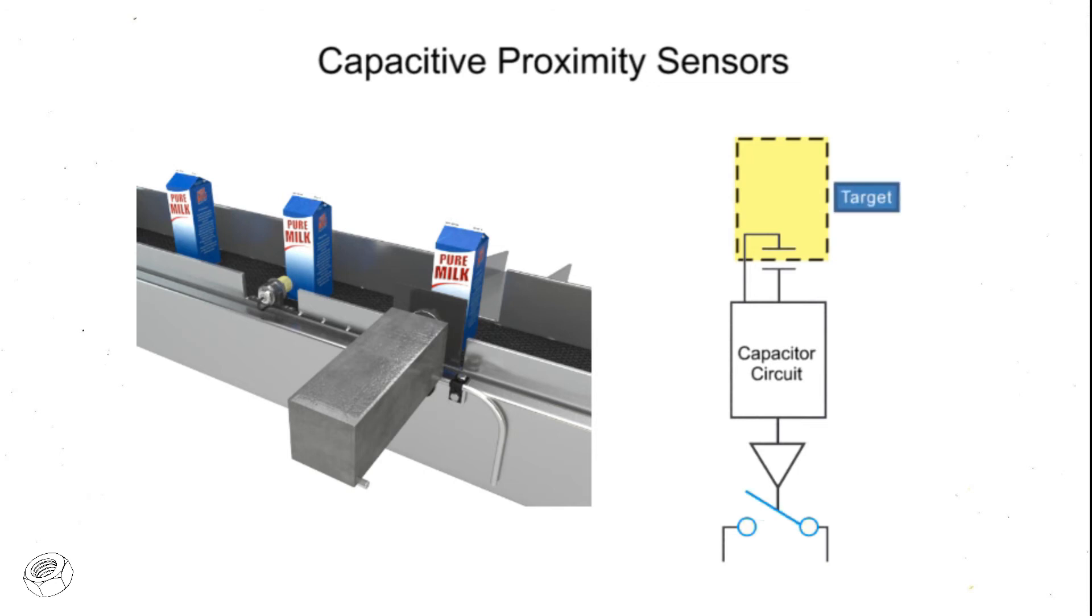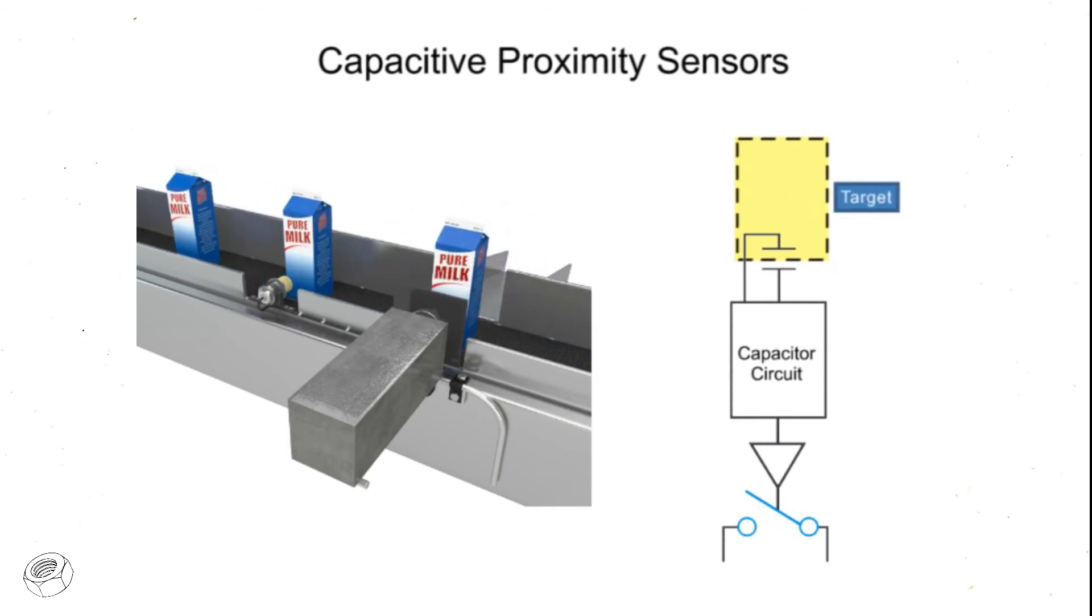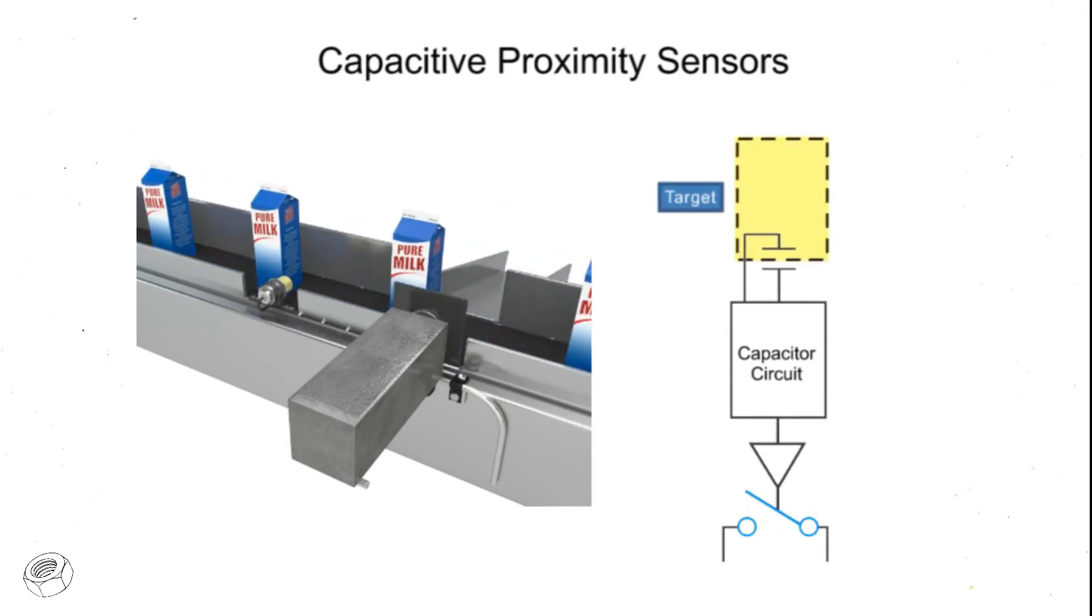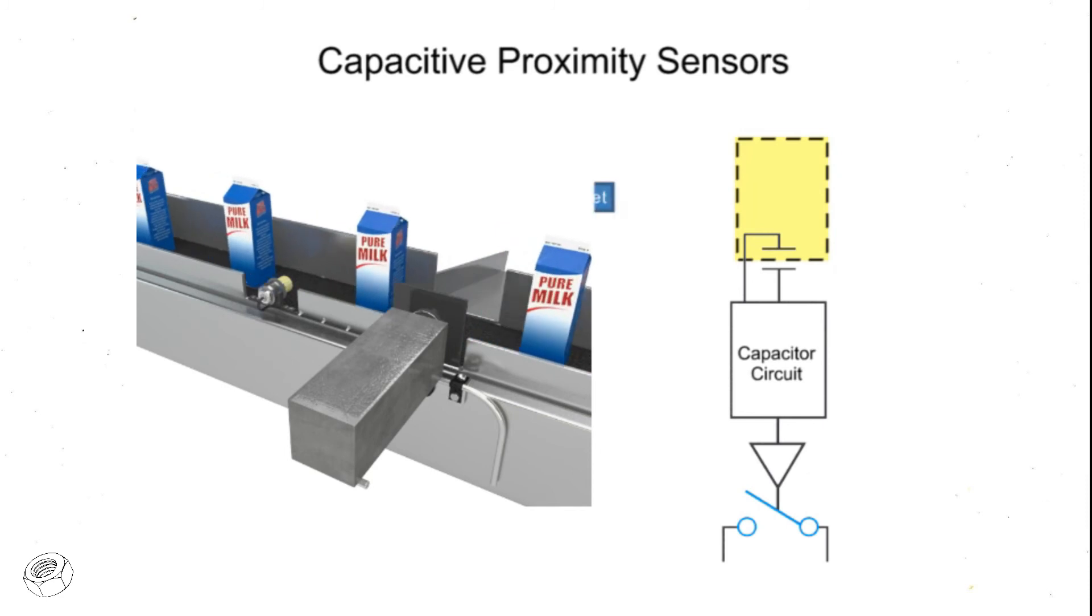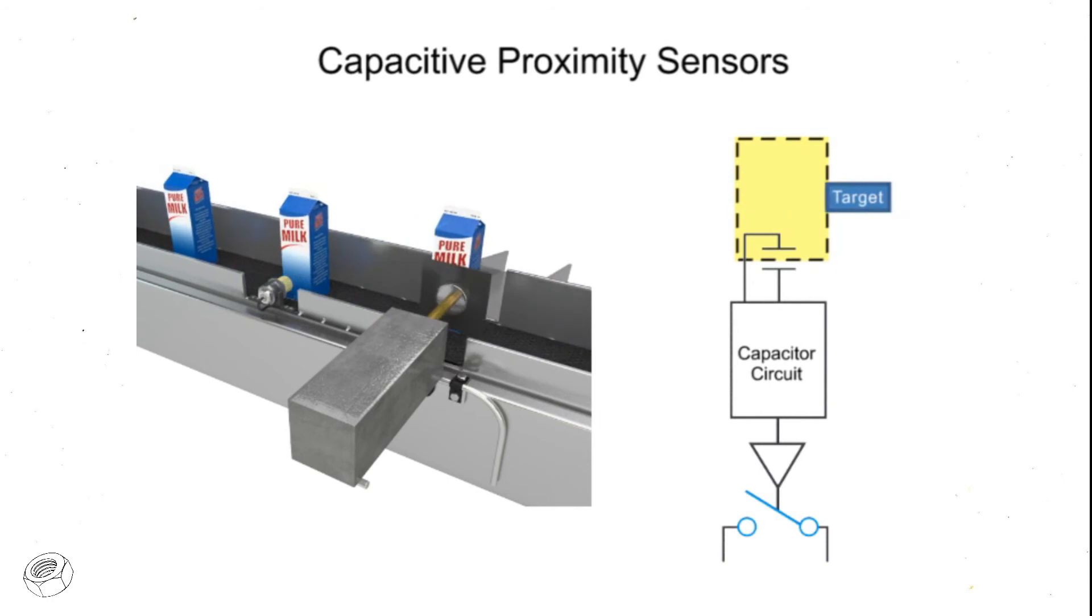In this example, if liquid is detected in the milk carton, the pusher device allows the milk to pass through. If no contents are detected, the pusher device rejects it and sends it to a different location.